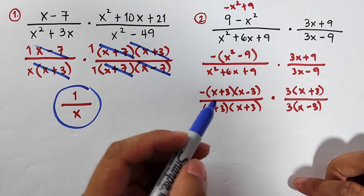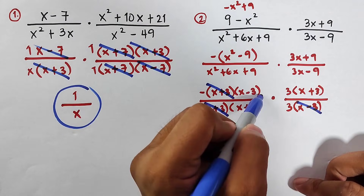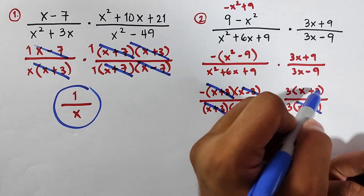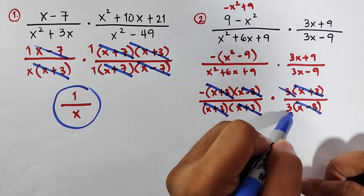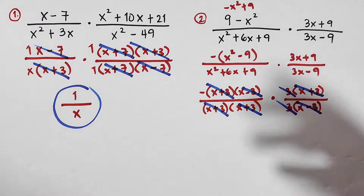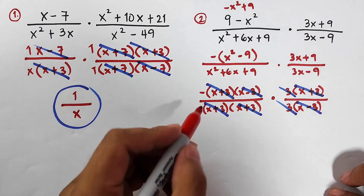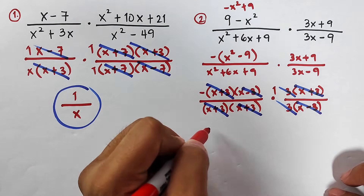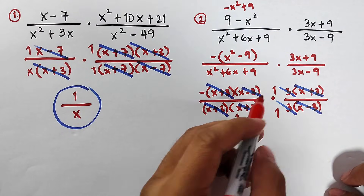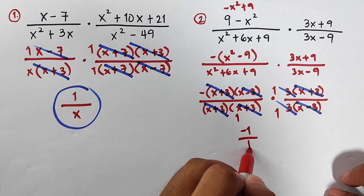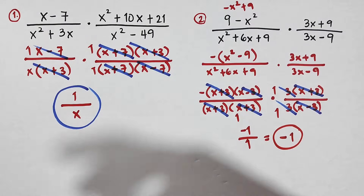Since all expressions are in factored form, we can see what factors can be eliminated. We eliminate matching pairs: x plus 3 with x plus 3, x minus 3 with x minus 3, and the 3s as well. As you can see, we don't have any variable remaining. What remains is just negative times positive 1, which is negative 1. So the final answer for item number 2 is negative 1.